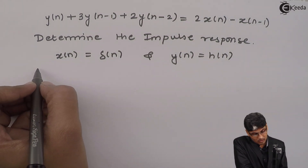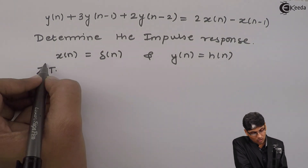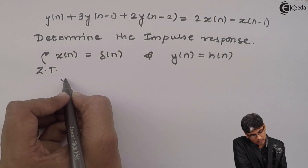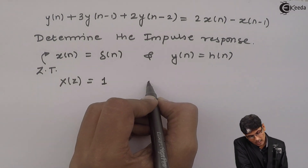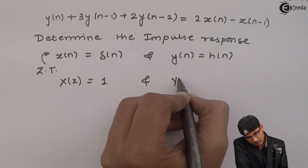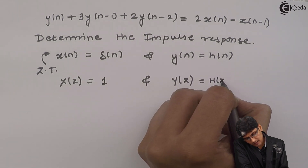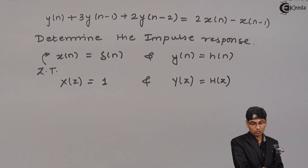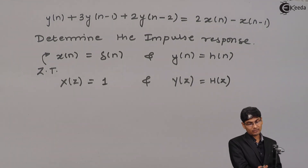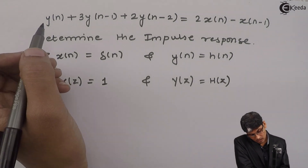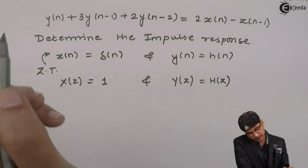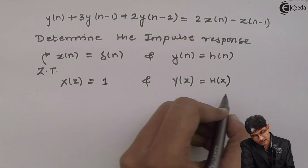The Z-transform of the above equation will give: X(z) — the Z-transform of an impulse is 1 — and y(n) gives Y(z), and h(n) gives H(z). I will replace every y(n) with H(z) and every x with 1.